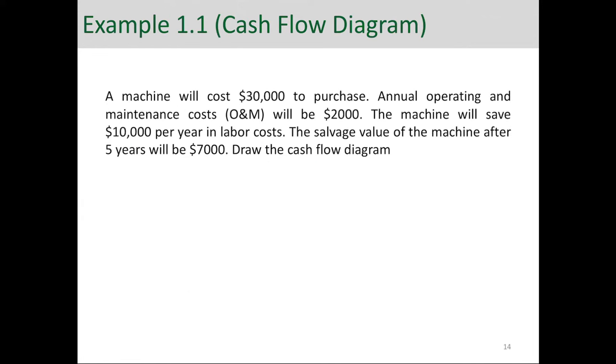Let's look at this simple example and draw a cash flow diagram for it. A machine will cost $30,000 to purchase. Annual operating and maintenance costs will be $2,000. The machine will save $10,000 per year in labor costs. The salvage value of the machine after five years will be $7,000. Draw the cash flow diagram.